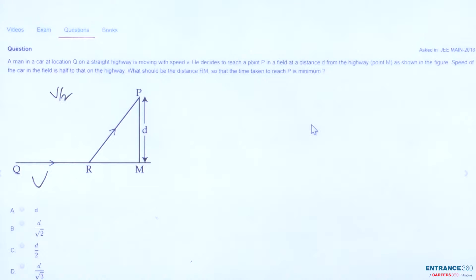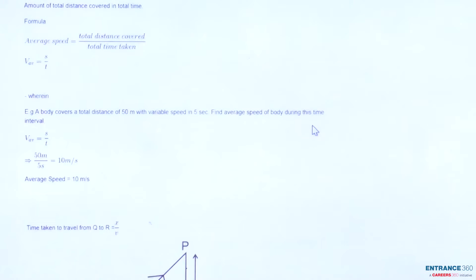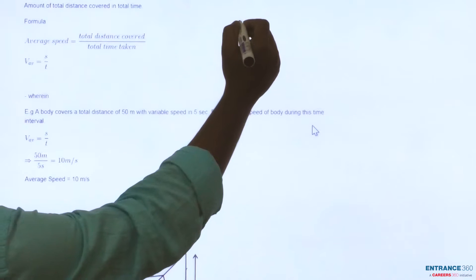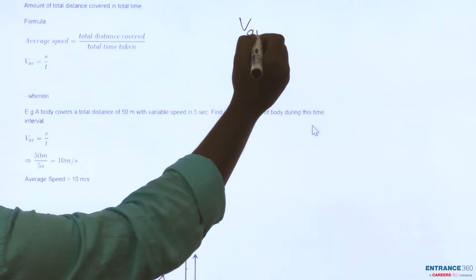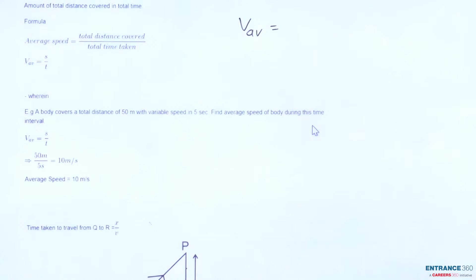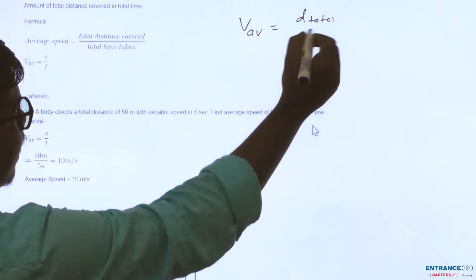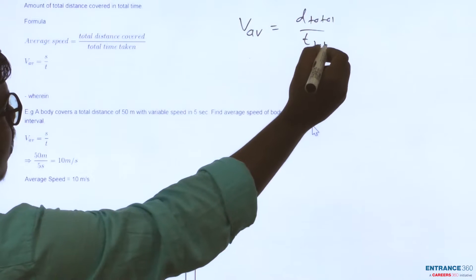Let's try to find the solution for this question. To solve the question we must understand the concept which will be helpful. The concept here says the formula for average speed is given as total distance covered upon total time taken. This is the formula.